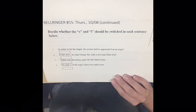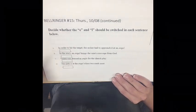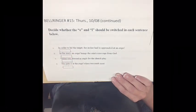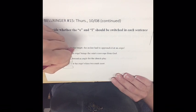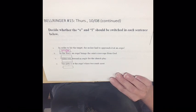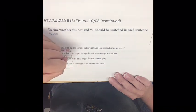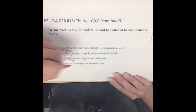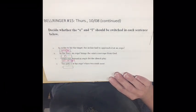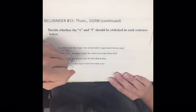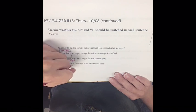Decide whether the E and L should be switched in each sentence below. A: 'In order to hit the target, the archer had to approach it at an angel.' That should be angle. B: 'In the story, an angel brings the saint a message from God.' This is already correct. C: 'Vicki was dressed as angle for the church play.' That is wrong — it should be angel. D: 'The park is at the angel where two roads meet.' That should be angle where two roads meet.